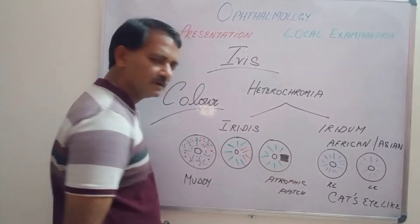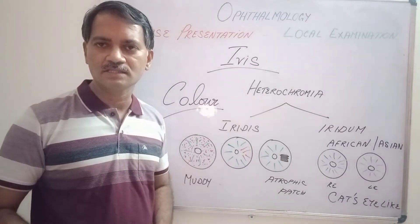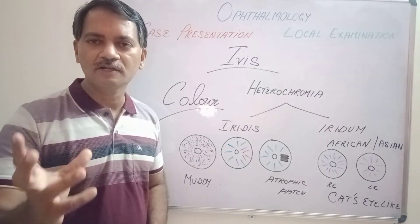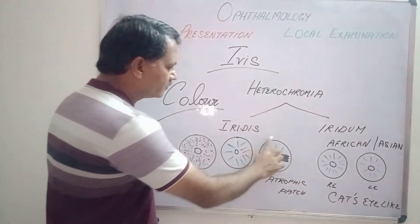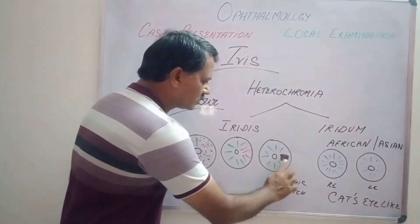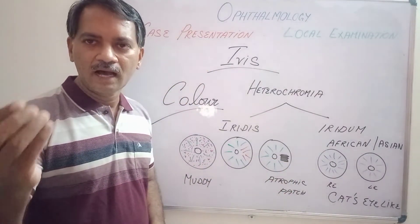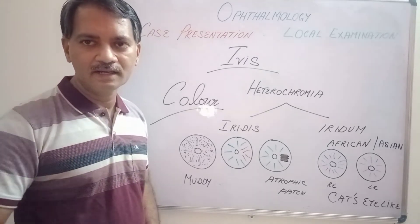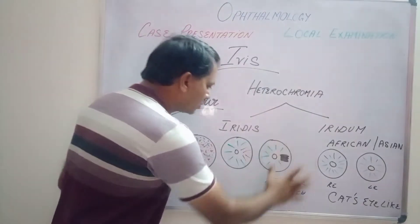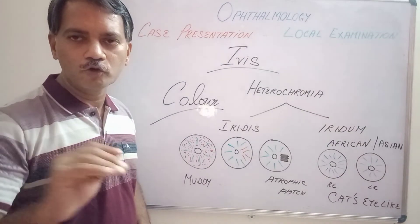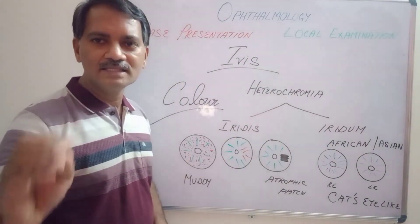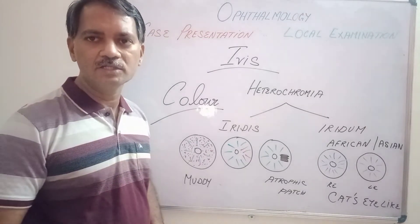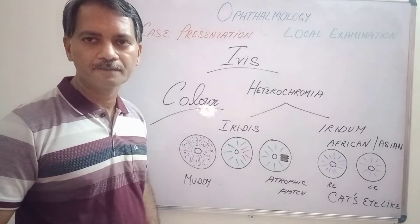Coming to the third example: sometimes, due to certain diseases, some portion of the iris may get damaged, leading to atrophic patches. Here I have drawn a green colored iris with a patch of blackness. The atrophy of the iris can appear black or gray in color. This is also one of the examples for heterochromia iridis. Usually this occurs in diseases like iridocyclitis, glaucoma, or damage to the iris during surgery, or due to trauma.